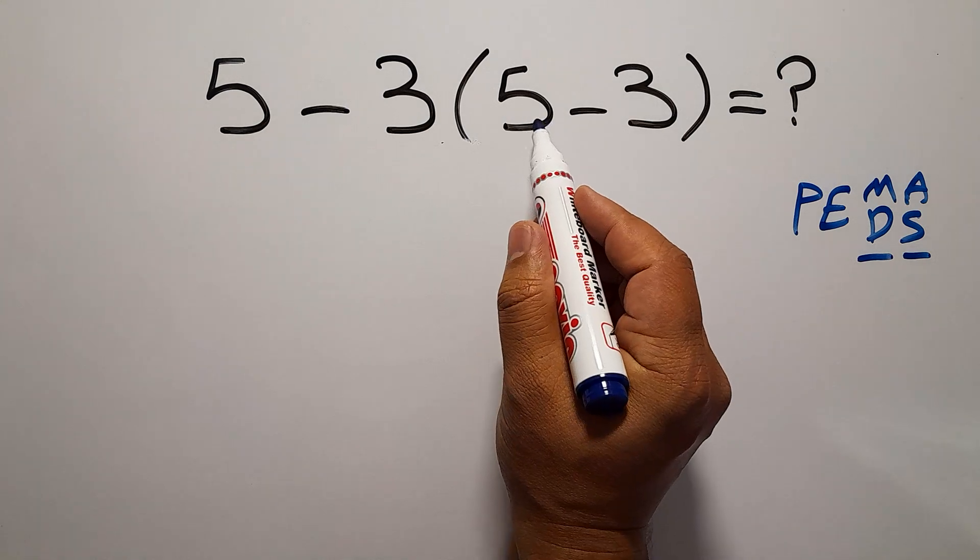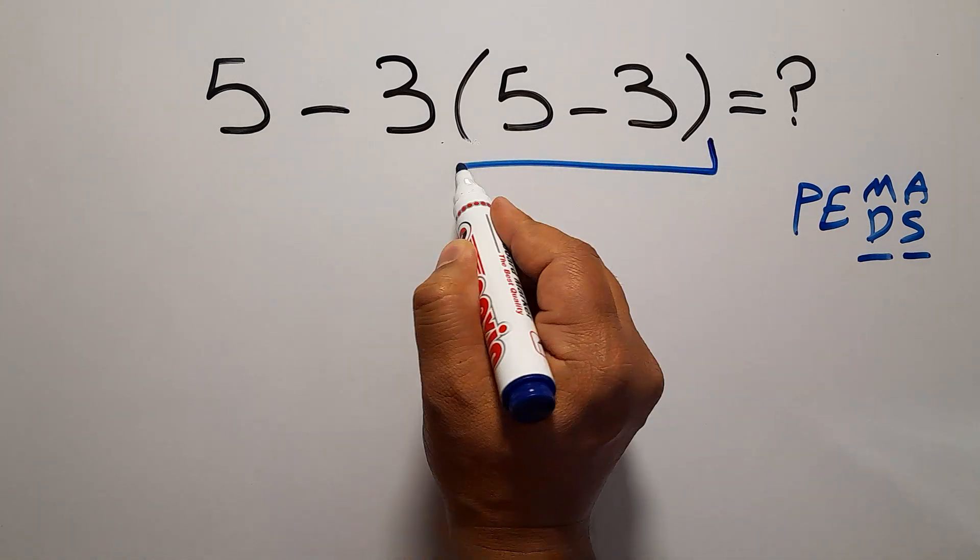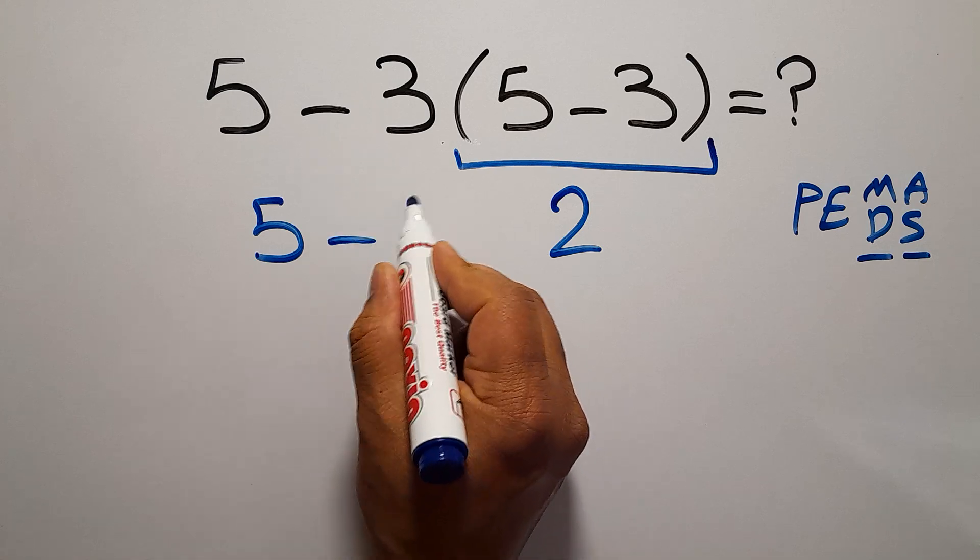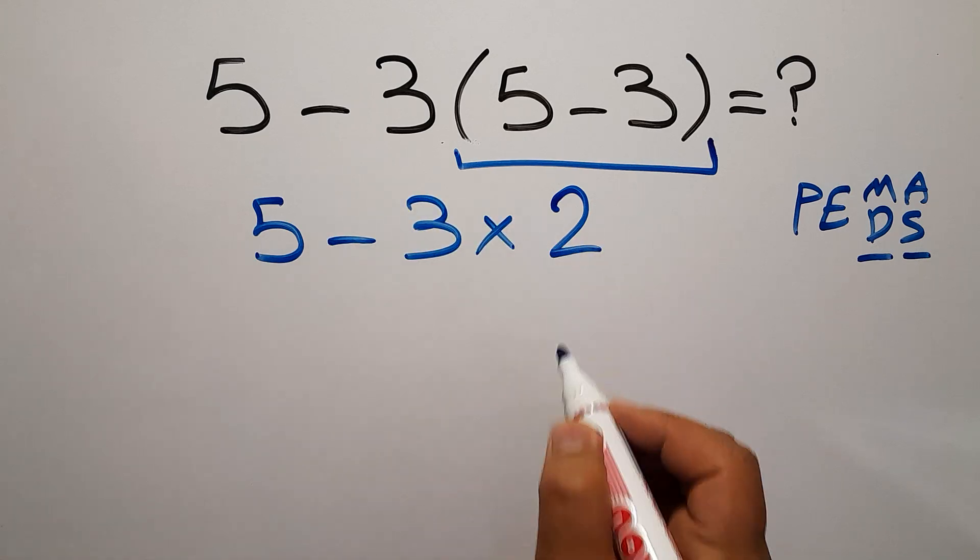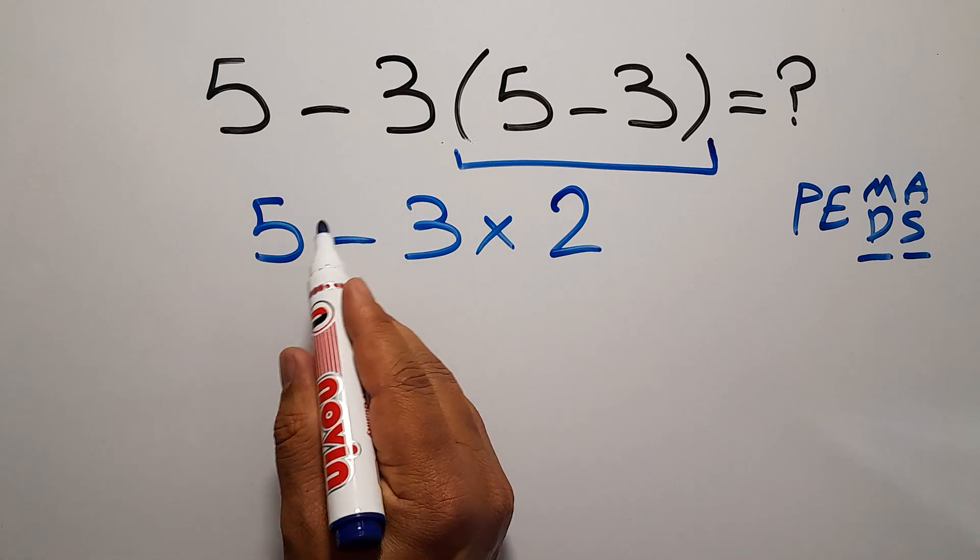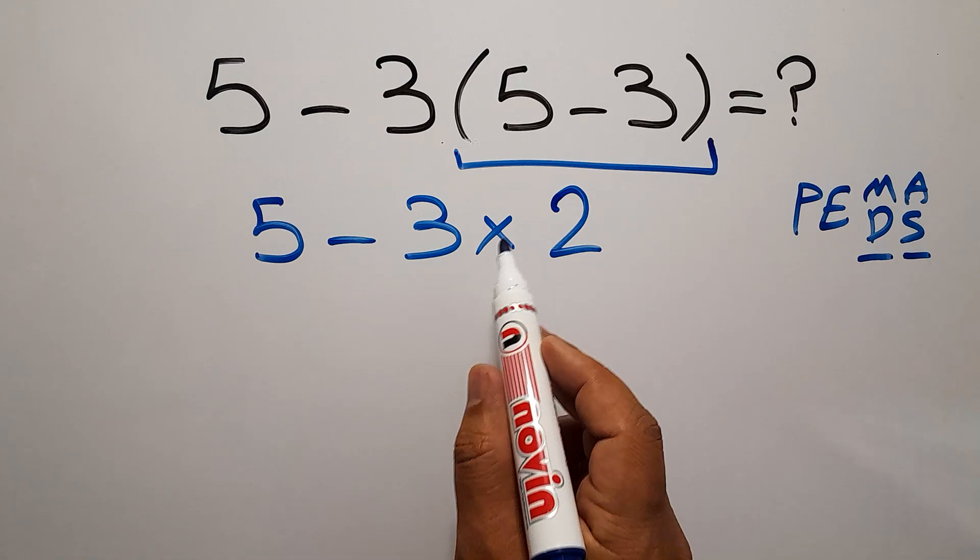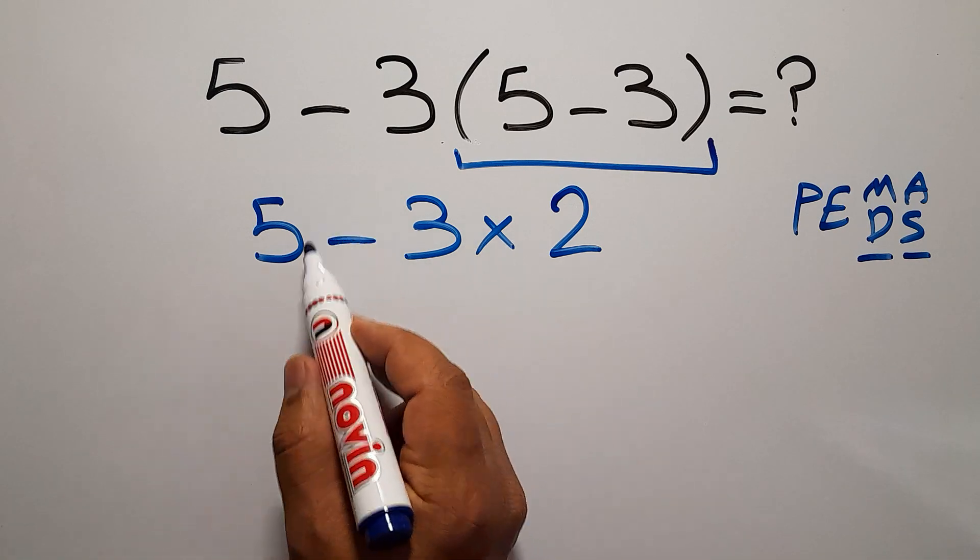So 5 minus 3 is just 2. So we have 5 minus 3 then times 2. Now we have 1 subtraction and 1 multiplication. In PEMDAS multiplication comes before subtraction.